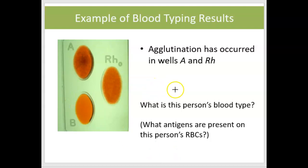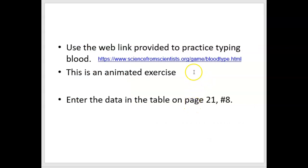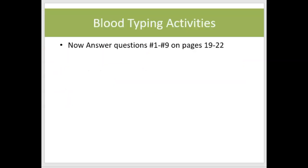Since we're not meeting in person, there's a really nice online activity where you get to practice doing blood typing. It's animated, but please go to that link — it'll have you put blood into wells, put antibodies into wells, look for agglutination, and determine the blood type. When you do this animated exercise, you can enter your data on page 21 for the people listed in number eight: Mr. Smith, Ms. Jones, Mr. Green, and Ms. Brown. We'll go over the answers in class after we do heart anatomy next week.